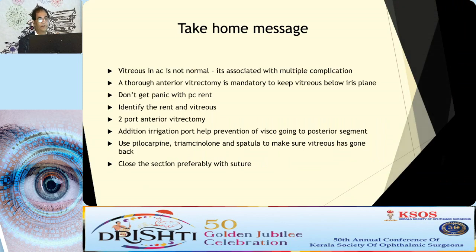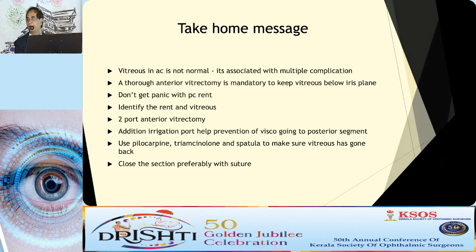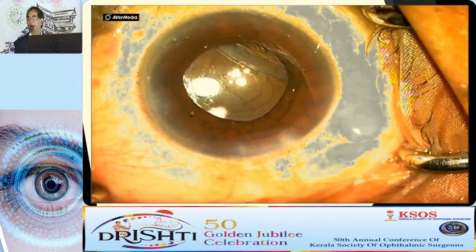We can enlarge the posterior fibrotic capsule and do an optic capture, because if you leave the lens in the sulcus it will dip back again. The take-home messages are: vitreous management is not normal — be careful and remove it thoroughly. A thorough anterior vitrectomy is mandatory to keep vitreous below the iris plane. Do not panic when you have a PC rent — it is part of your surgery. Identify the rent and do vitrectomy. Two-port vitrectomy is good; an additional port helps reduce visco going to the posterior segment. Use pilocarpine, triamcinolone, and a spatula to confirm vitreous is below the iris plane, and close the section preferably with a suture.